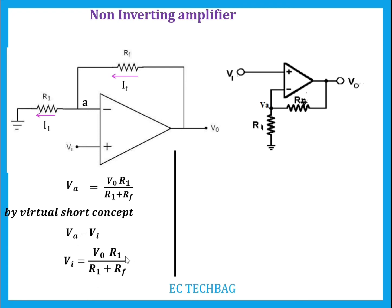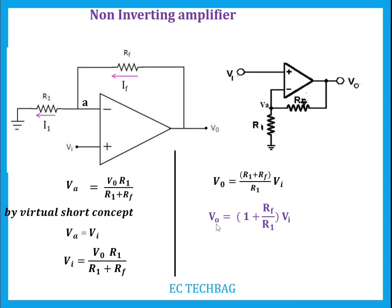Replacing Va with Vi gives: Vi equals V0 times R1 divided by (R1 plus Rf). Rearranging, V0 equals (R1 plus Rf) divided by R1, multiplied by Vi. Simplifying, V0 equals (1 plus Rf/R1) times Vi. So the output is (1 + Rf/R1) times Vi, and the gain — output divided by input — equals 1 plus Rf/R1.